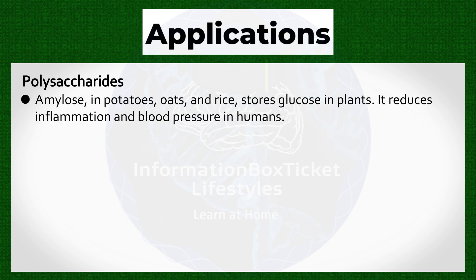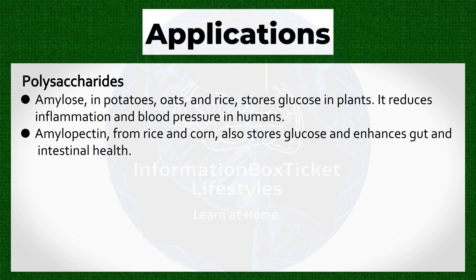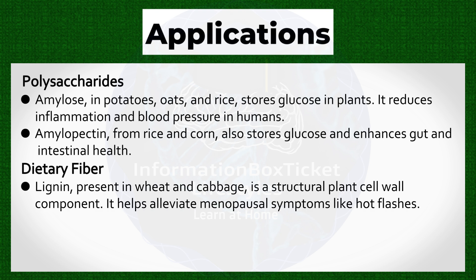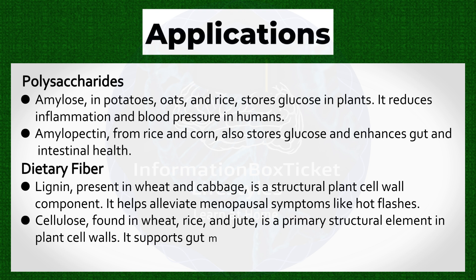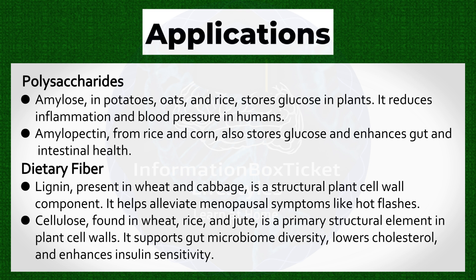Polysaccharides applications: Amylose, in potatoes, oats, and rice, stores glucose in plants and reduces inflammation and blood pressure in humans. Amylopectin, from rice and corn, also stores glucose and enhances gut and intestinal health. Dietary fiber applications: Lignin, present in wheat and cabbage, is a structural plant cell wall component that helps alleviate menopausal symptoms like hot flashes. Cellulose, found in wheat, rice, and jute, is a primary structural element in plant cell walls that supports gut microbiome diversity, lowers cholesterol, and enhances insulin sensitivity.